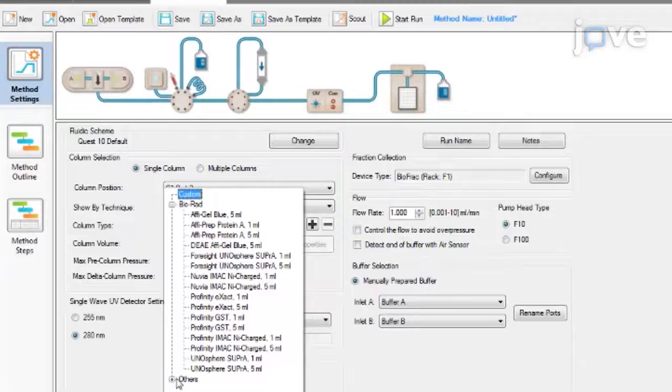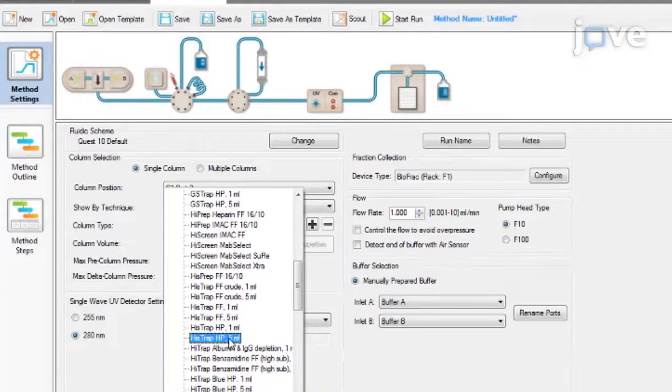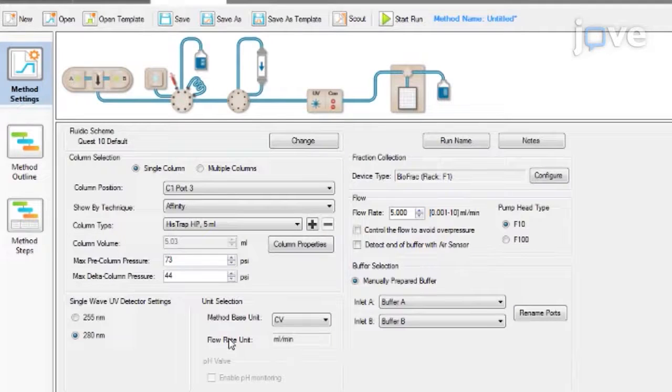In the Column Type drop-down menu, select Others, HisTrap HP, and 5 milliliters. The Column Volume and the Pressure boxes will automatically be set to the appropriate values.